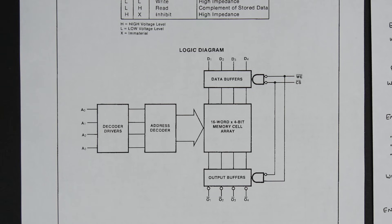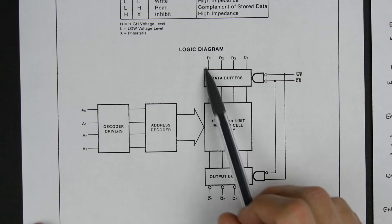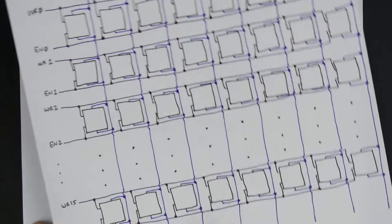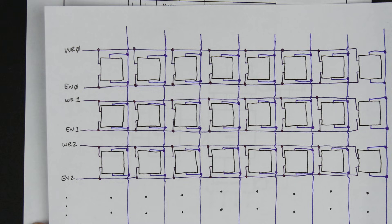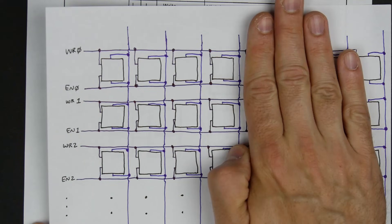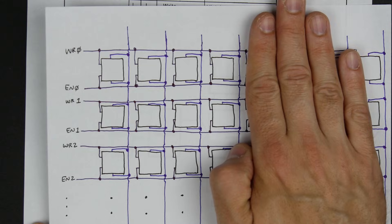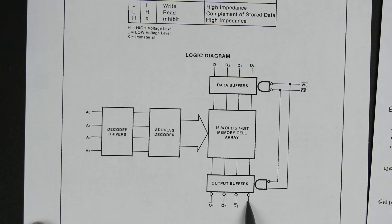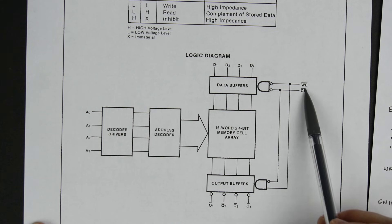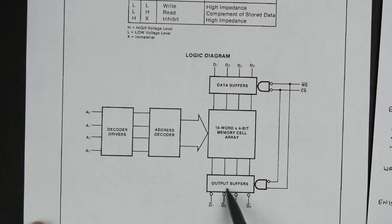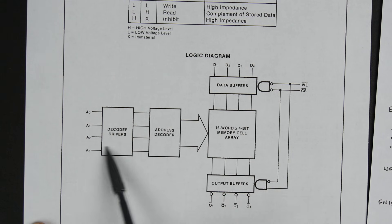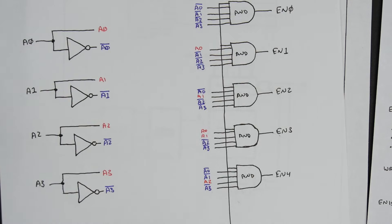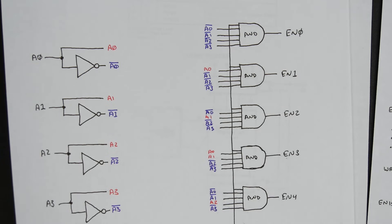If we look at the data sheet, there's a block diagram showing a 16-word by 4-bit memory cell array — basically what we have here, except we need 16-word by 8-bit, so the chip gives us half and we use two chips. You can see 4 bits coming in, 4 bits coming out, chip select and write enable signals, and then the four address lines. They have the address decoder as a block, but as we just went through, we now understand what that address decoder is doing.